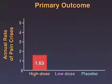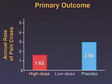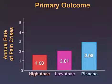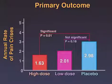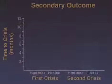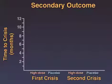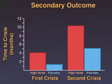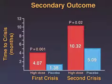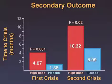The rate was 1.63 episodes per year in the high-dose crizanlizumab group, and 2.98 in the placebo group. The rate in the high-dose but not low-dose crizanlizumab group was significantly lower than the rate with placebo. Analysis of secondary outcomes found that the median time to first and second pain crises was significantly longer in the high-dose crizanlizumab group than in the placebo group.